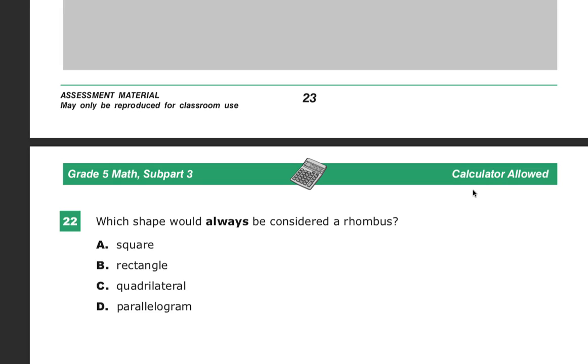This is sort of a definitions question. You might just have to know what the definitions are. So when I have a rhombus, I'm looking for four sides and I want all sides equal. That's it. That's all that's required.